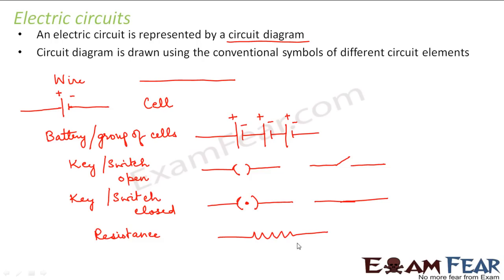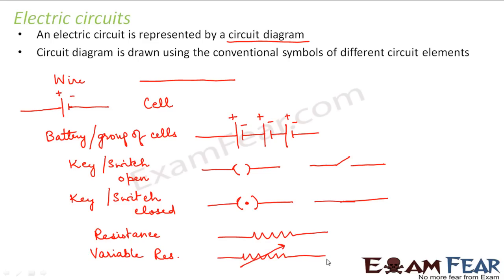How do I represent resistance? Resistance is represented like this when it has a fixed value — for example, 2 ohms or 5 ohms. But if you want to represent a variable resistance, sometimes called a rheostat, that is represented with an arrow symbol. This means the resistance can change its value depending upon the requirements of the circuit.